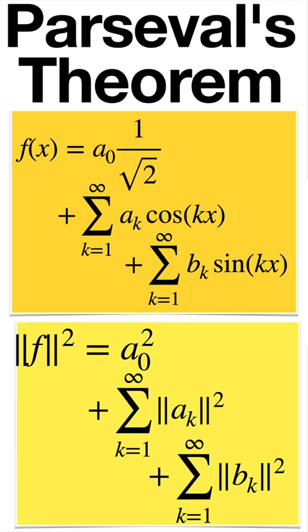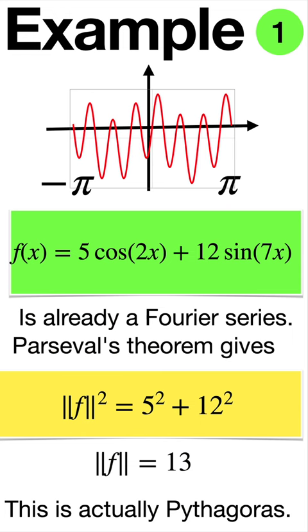Parseval's theorem now tells that the sum of the squares of the coefficients is the square of the norm. In the case of a sum of two trig functions, for example, it is actually the Pythagorean theorem. This function is odd, it has a sine series.